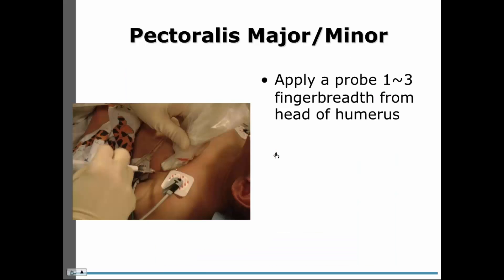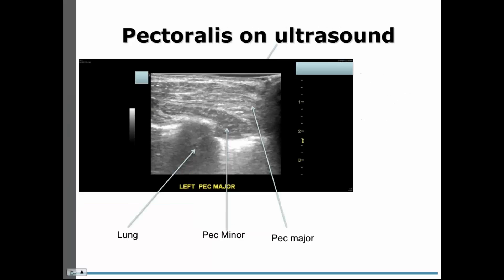This slide shows where to apply the probe and how to direct the needle to the right muscles. Apply the probe about one to three finger breadths from the humeral head to visualize the muscles. On the ultrasound, the top layer is the pectoralis major and below is the pectoralis minor. You can also see the lung, and clearly differentiate between the two muscles while avoiding lung puncture.